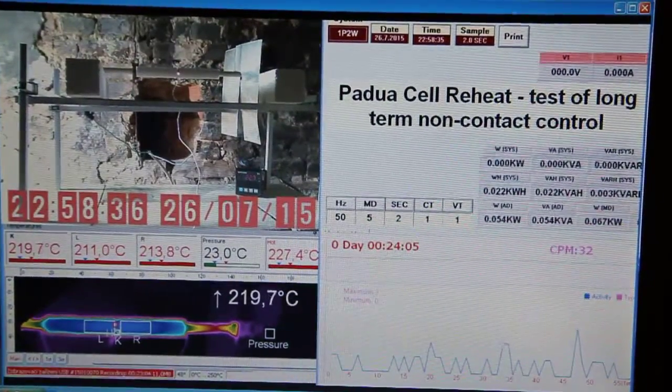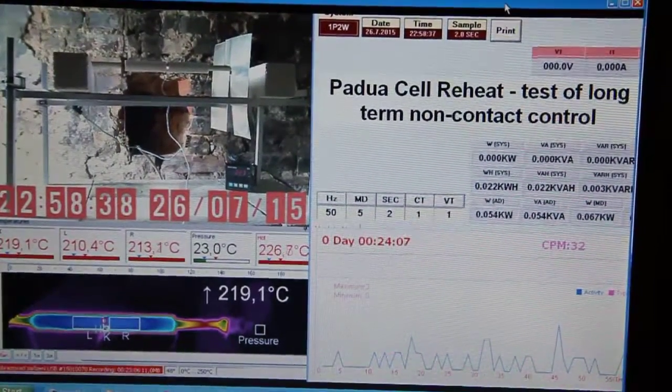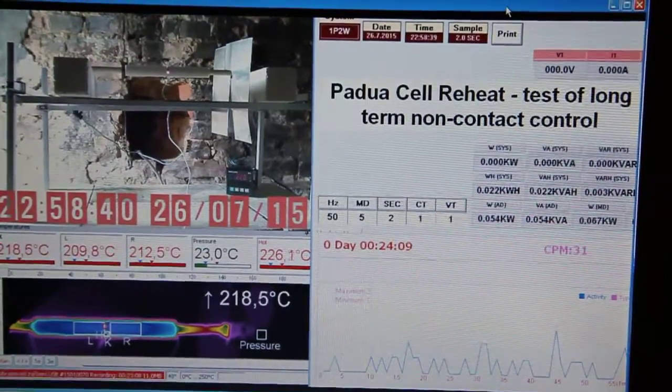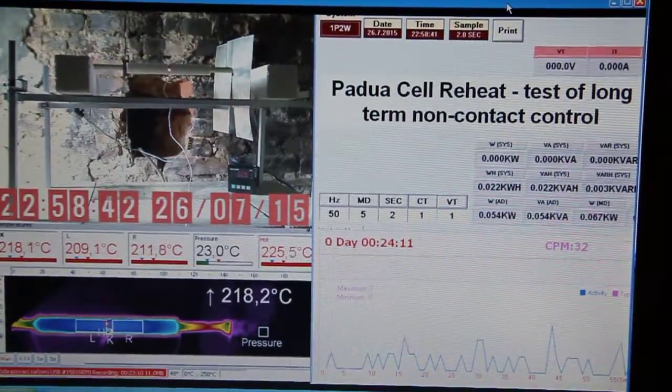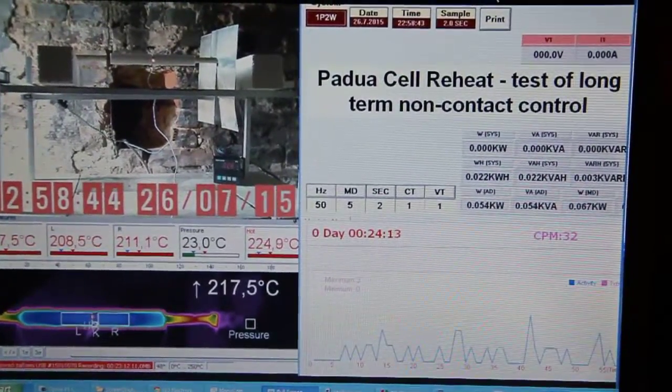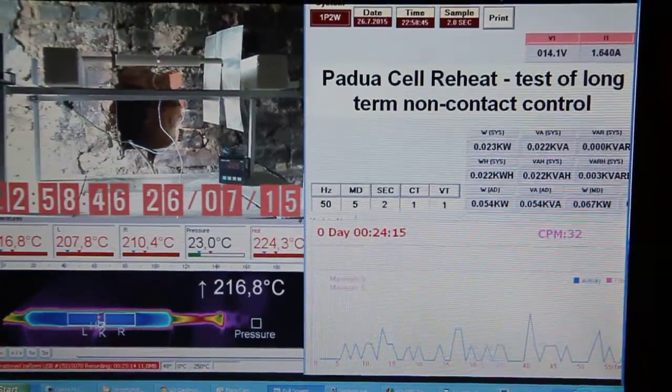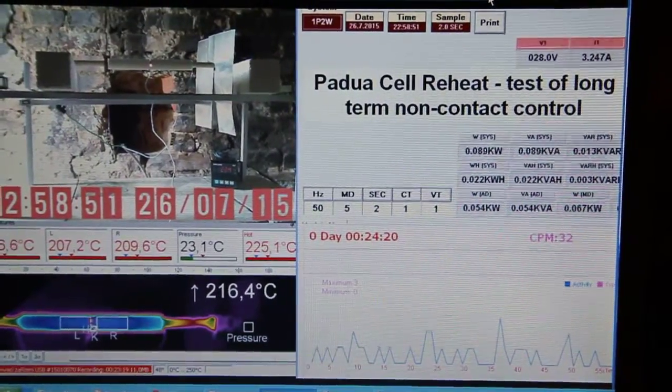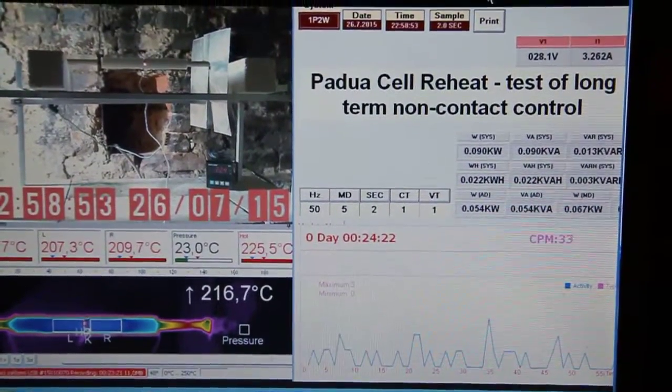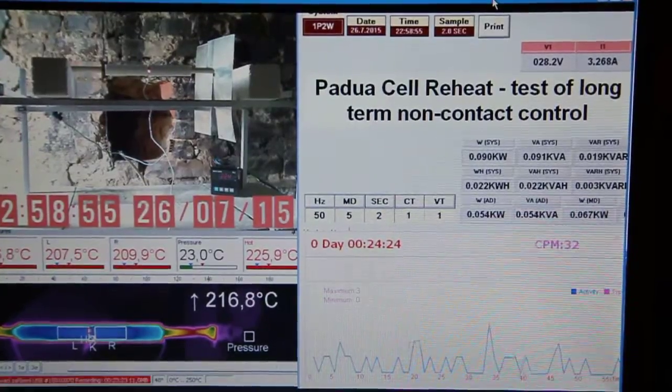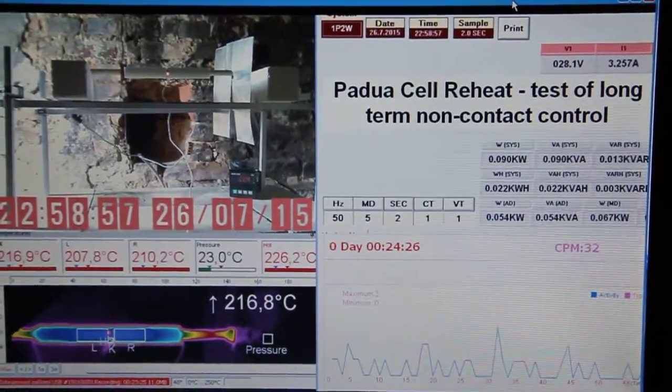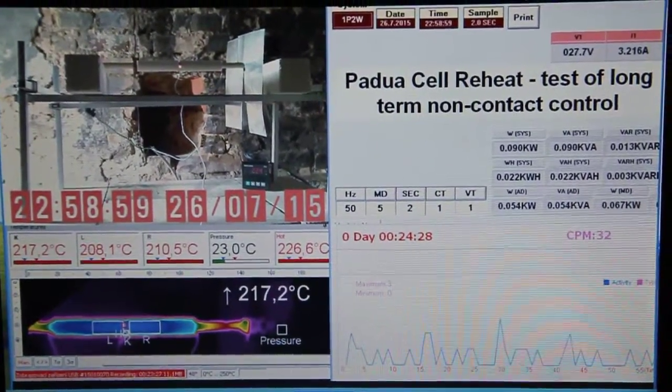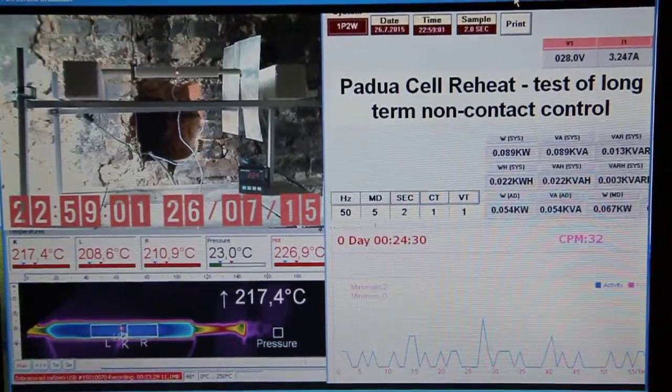On the right hand side you have the power analyzer PC830 output. Bottom right you have the counts per minute from the GMC300 geiger counter and on the bottom left you have the output from the Optris PI160.